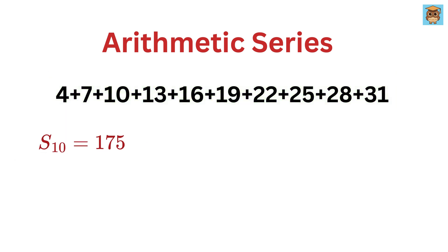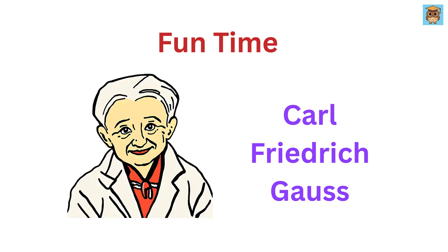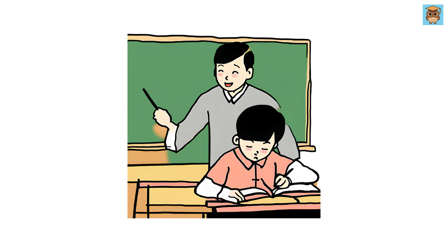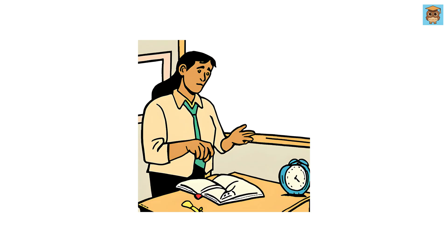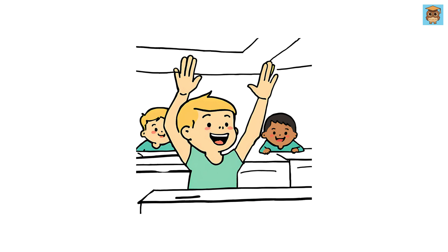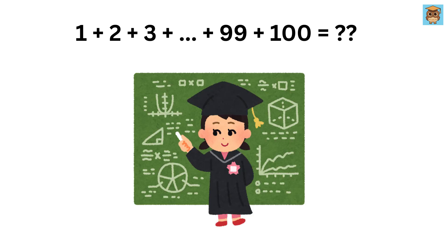Check this out. I have verified this for you. There's a famous story about a brilliant little kid named Carl Friedrich Gauss, who later became one of the greatest mathematicians of all time. When Gauss was just a young boy in school, his teacher gave the class a task to keep them busy: Add all the numbers from 1 to 100. The teacher expected this to take a while, but Gauss stunned everyone by solving it in seconds. Instead of adding each number one by one, Gauss noticed a pattern.